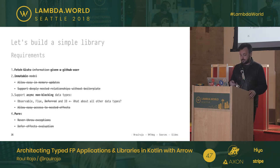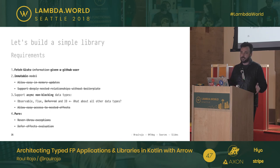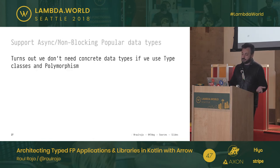We're now supporting Deferred and allowing easy access to nested effects with monad transformers. But we still need to support Observable, Flux, and IO. This is where Arrow is strong — it's the single library that allows polymorphism for type functional programming in this style. We don't need concrete data types; we're going to use type classes and polymorphism.